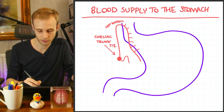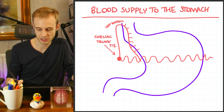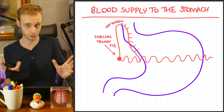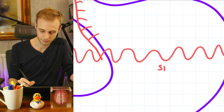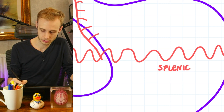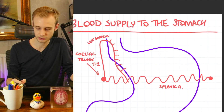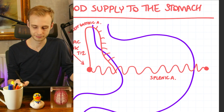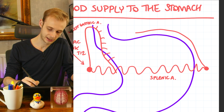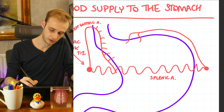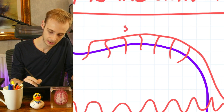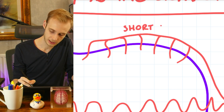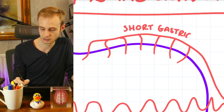The next one — the one that everyone remembers — is the splenic artery, which has this wiggly, classically tortuous path. Just for reference, this is traveling behind the stomach. As the splenic passes behind the stomach, it gives off all of these vessels to the far side of the body of the stomach and the fundus. These are simply called the short gastric arteries.